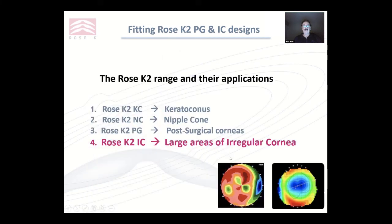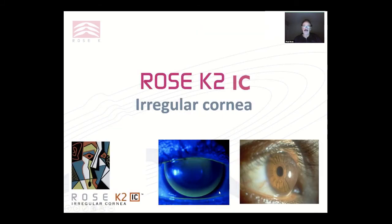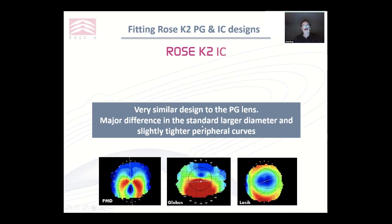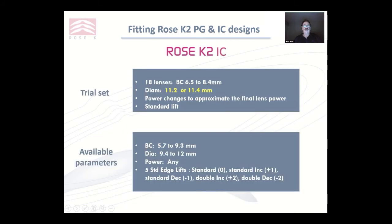Moving on to the IC design. It's a slightly larger corneal lens, and you'll notice it occupies most of the cornea. It's for larger areas of distortion. Its prime indications are early pellucid marginal degeneration, globus, laser-produced cicatrix, but also corneal grafts and large, very decentred oval cones. The design is very similar to the PG lens — a major difference is the standard larger diameter of around 11.2 or 11.4 and slightly tighter peripheral curves. It has reverse geometry exactly the same as PG, and it is about a millimetre bigger standard size than the PG lens, occupying most of the cornea.